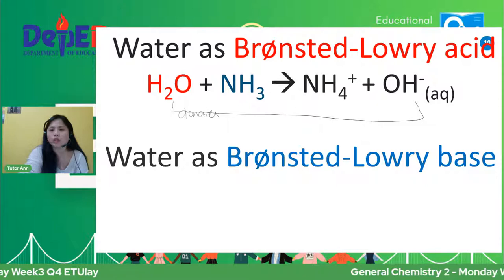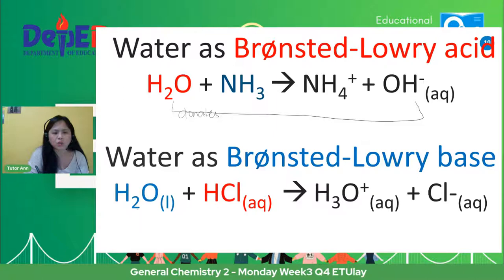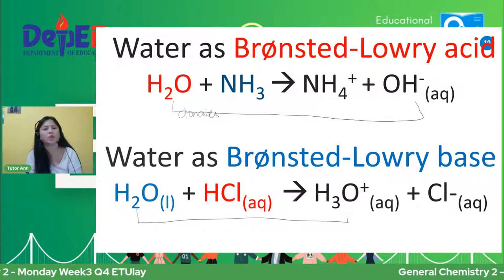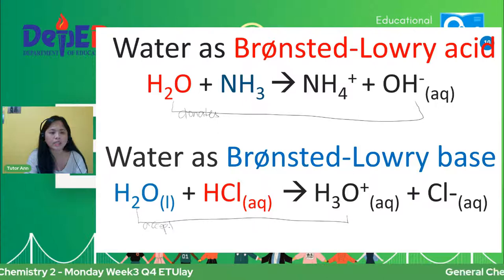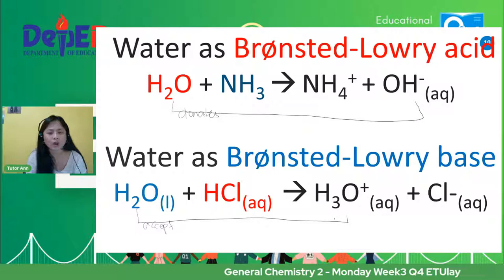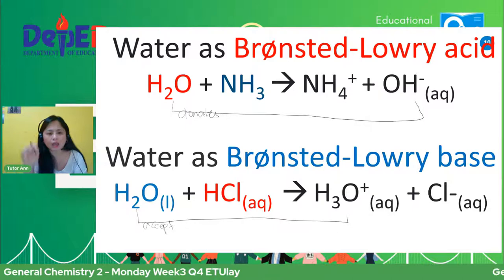In this example naman, water as Bronsted-Lowry Base — you will see that from H2O, naging H3O siya. H3O positive, naging hydronium ion siya. So from H2O, naging H3O positive, naging hydronium ion — it accepted. So nagkaroon siya, it has the ability to accept — this H2O has the ability to accept proton, kaya naging H3O positive siya, or hydronium ion. So that leads us — yung water na yan is a Bronsted-Lowry Base.